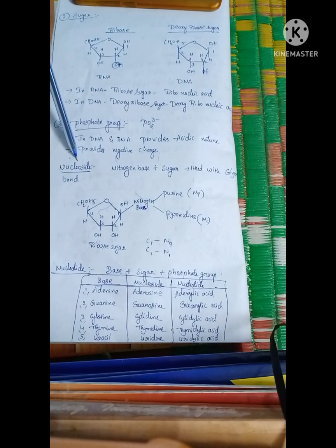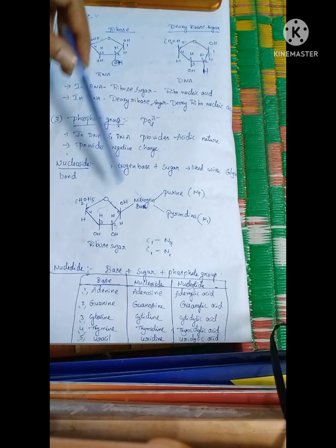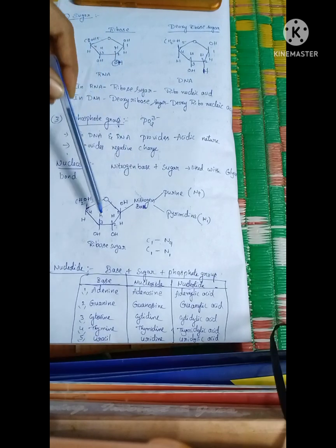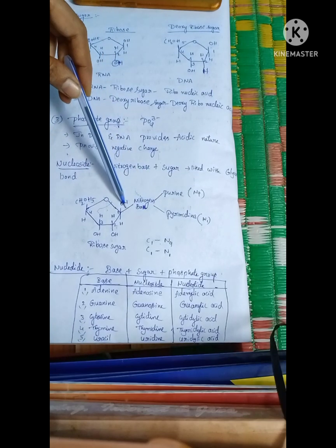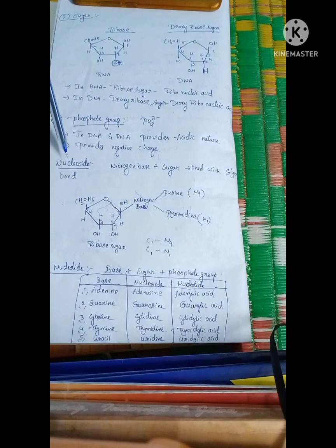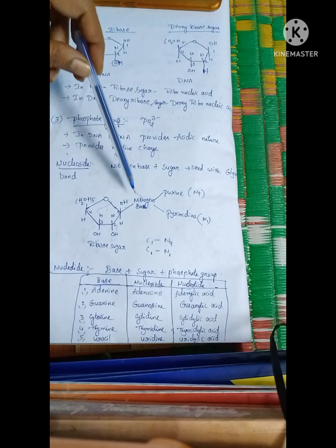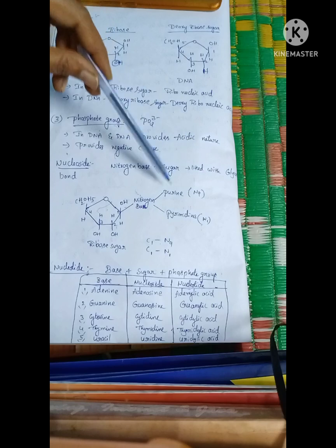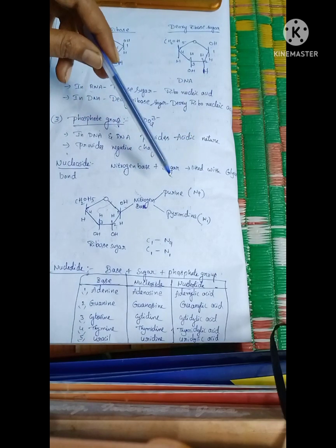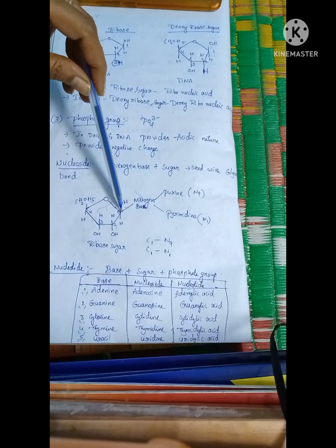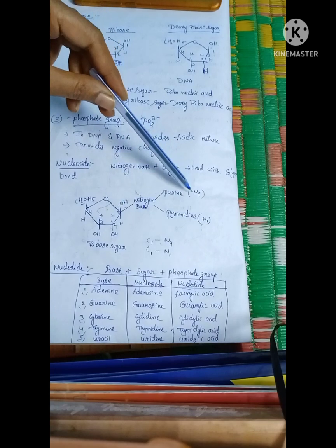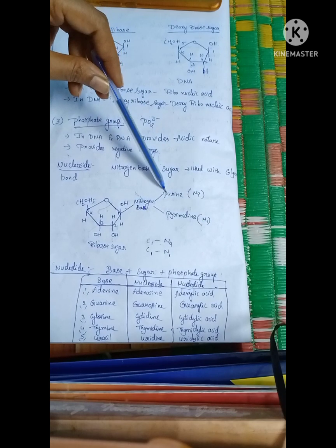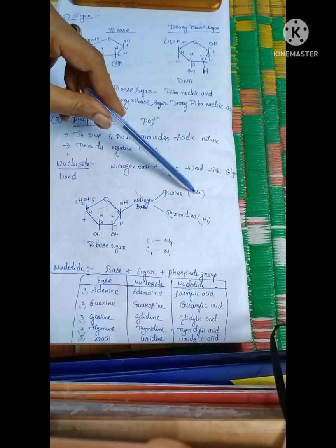A nucleoside is: nitrogen base plus sugar, connected by a glycosidic linkage. Purines attach at the N9 position to the first carbon of sugar. Pyrimidines attach at the N1 position — so the linkage positions are C1-N9 for purines and C1-N1 for pyrimidines.